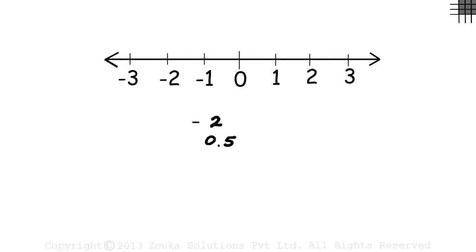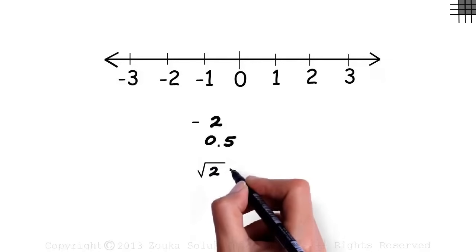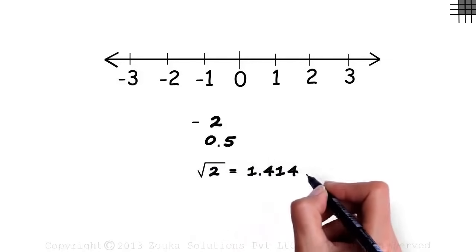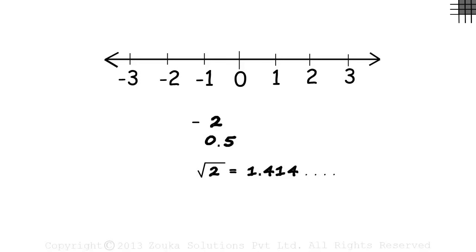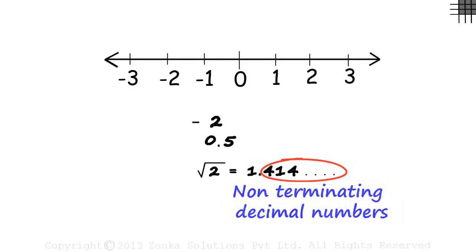Now let's look at another number. Root two, which is also called the square root of two. If we calculate the value of root two, we get it as one point four one four approximately. The digits after the decimal point do not end. These kind of numbers are called non-terminating decimal numbers.